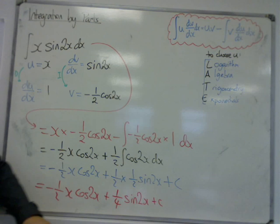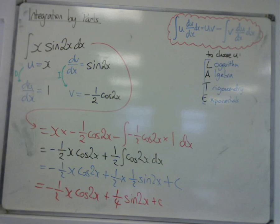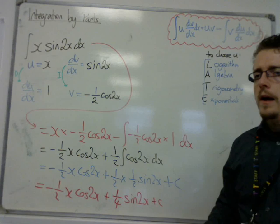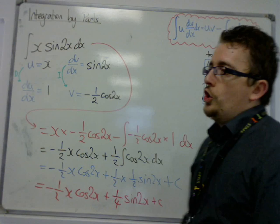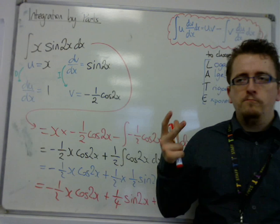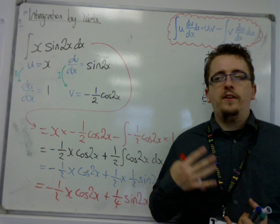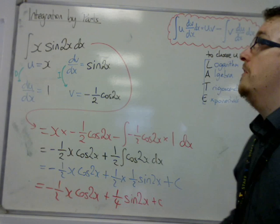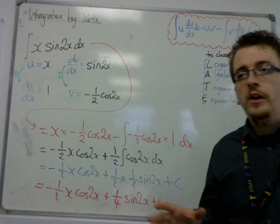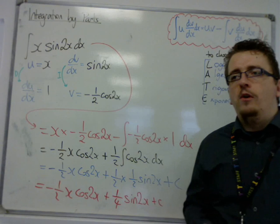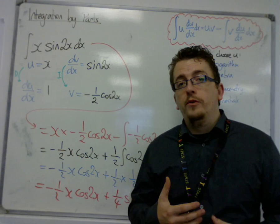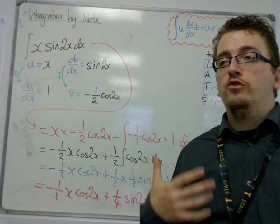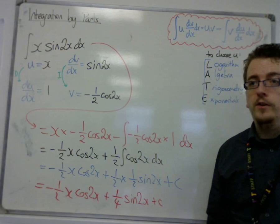And there we are. That is the integral of x sin 2x. So these have been two relatively straightforward examples of using integration by parts. Notice how they've both been indefinite integrals. We need to deal with definite integrals. We're also going to need to deal with a process where we use integration by parts twice. That will be in the next couple of videos.